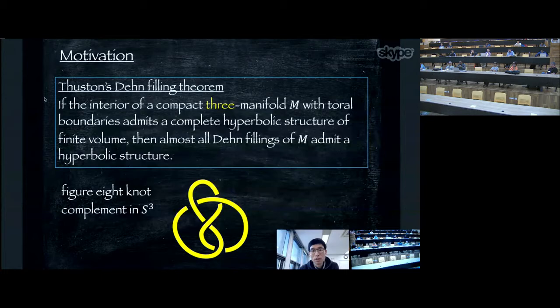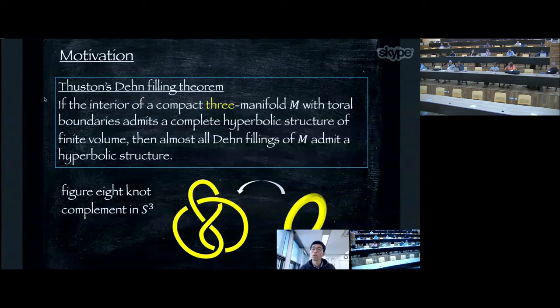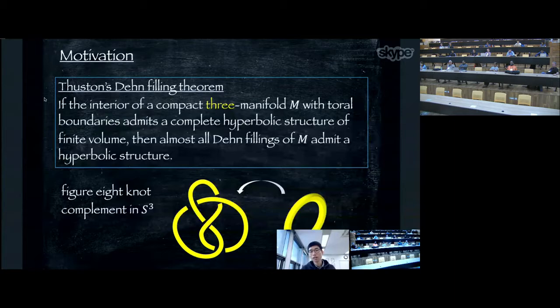One obvious compact three-manifold with a torus boundary is a solid torus. Both manifolds have the same boundary, which is a torus, so we can glue these two objects via the boundary. There are several ways to glue these two manifolds, but Thurston's Dehn filling theorem tells us that except for a finite number of cases, almost all Dehn fillings admit a hyperbolic structure.